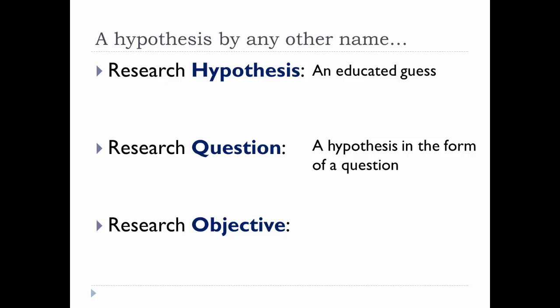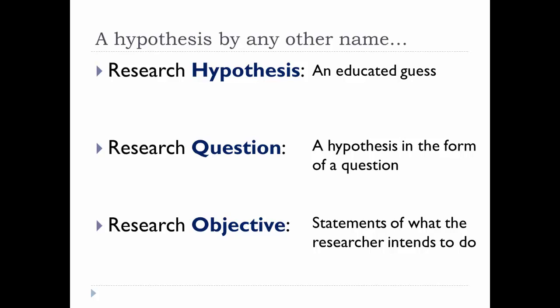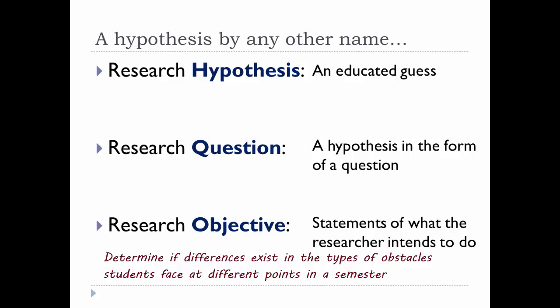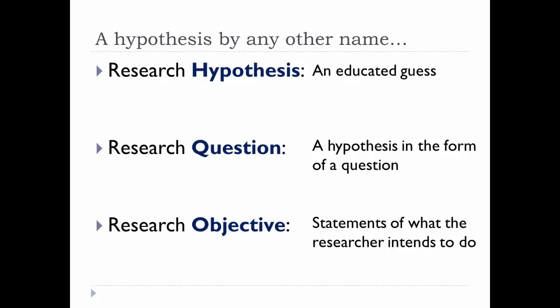A research objective communicates what the researcher plans to do, stated in a specific and measurable way. It can take the research question and convert it — for example, to identify obstacles students face when studying for and taking final exams, or to determine if differences exist in the types of obstacles students face at different points in a semester. Research objectives help the researcher figure out what he or she is aiming to find at the end of the study.